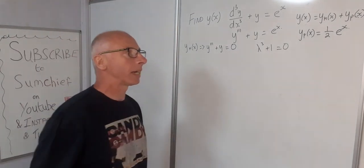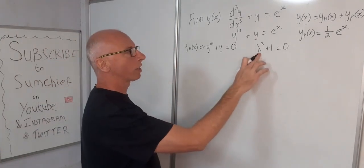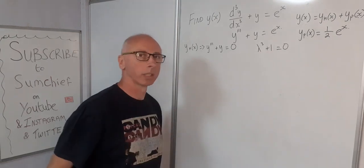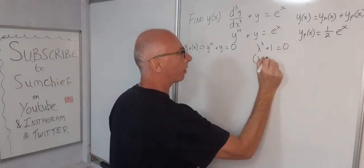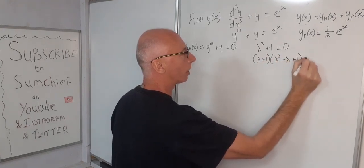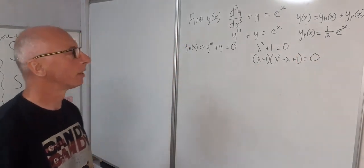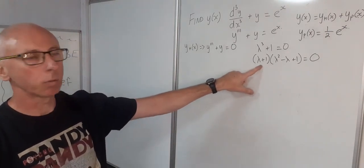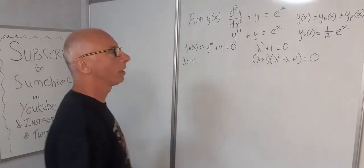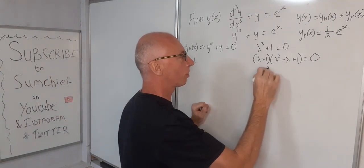How are we going to factor this out? Well, λ³ + 1 — we know that λ = −1 is a solution since (−1)³ + 1 = 0. So we can factor out (λ + 1) and multiply that by (λ² − λ + 1), and that equals zero. Multiply it out and you'll come back to this. So we know that λ = −1 is one solution.